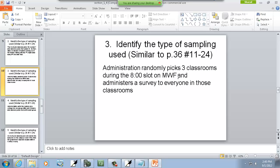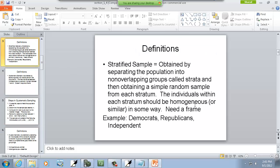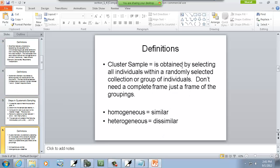Okay. Administration randomly picks three classrooms during the eight o'clock slot on Monday, Wednesday, and Friday and administers survey to everyone in those classrooms. Now, so at eight o'clock, everybody's in a particular classroom. So, already it's divided up into, like, maybe 20 classrooms, for example. Then randomly picks three and administers surveys to everyone in those classrooms. Now, here's where you split them into groups and then you randomly sample from within each group. That doesn't fit. Definitely not systematic. Cluster. Obtained by selecting all individuals within a randomly selected collection or group of individuals. That's a cluster. All the classrooms are, that's what splits them up. And then they're randomly picking certain classrooms and then talking to everybody in those classrooms. So that's a cluster.